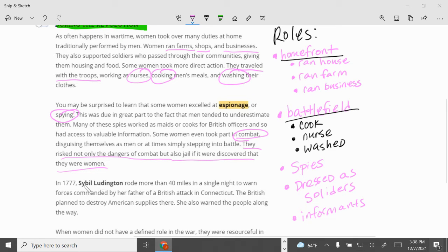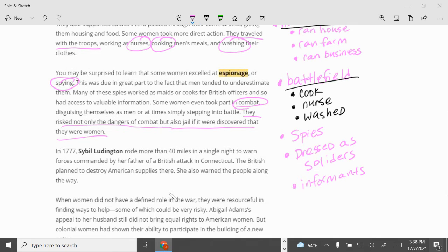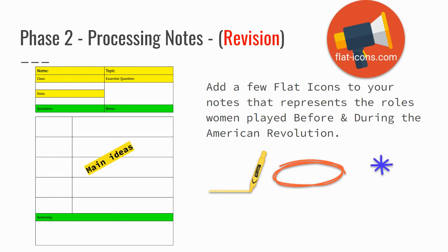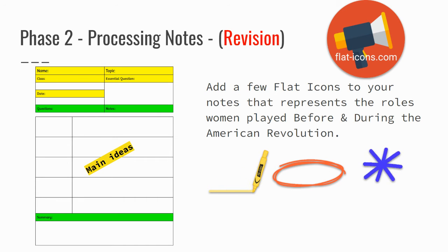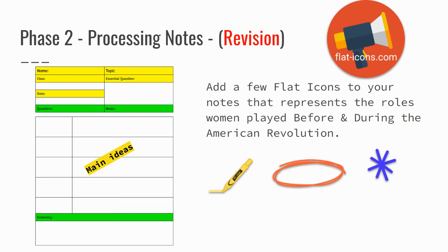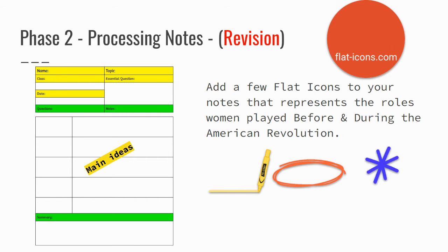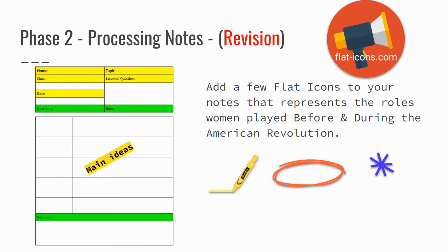Some were informants, as Sybil Ludington was. We put these roles into our notes, had a quick discussion, and wrote a summary. If you're seeing this for the first time, I encourage you — I think only one class was able to do this — please go back and include a couple of flat icons in your notes that show some of the roles women participated in as they fought the American Revolution.